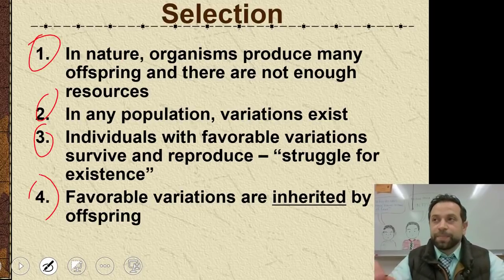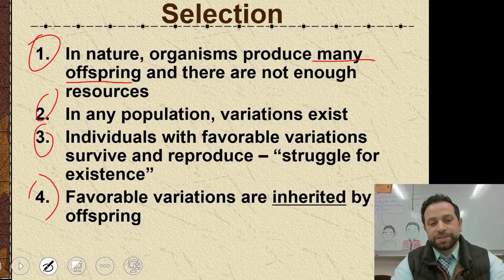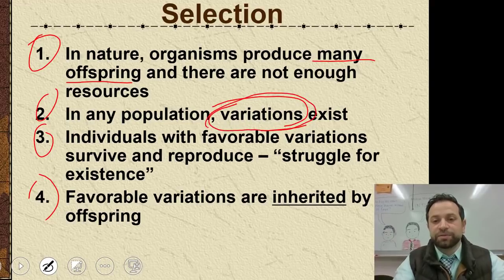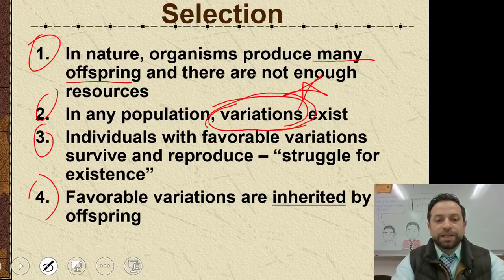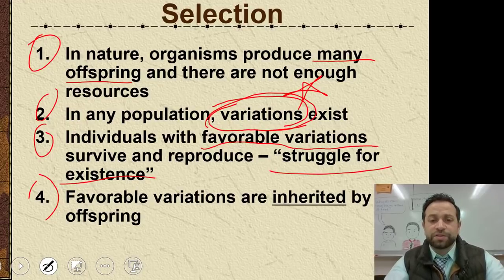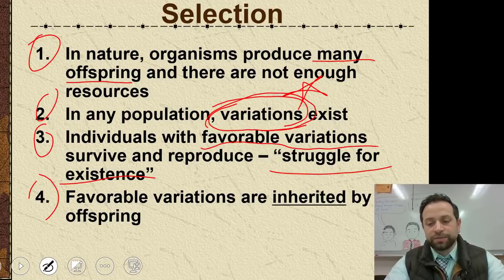First, in nature, organisms produce many offspring, and there aren't always enough resources. Second, in any population, variations exist — think about where variation comes from, like crossing over. Third, individuals with favorable variations survive and reproduce; this is what we call the struggle for existence. What determines whether a variation is favorable? It is the environment. And last, favorable variations are inherited by offspring — if you have a long neck as a giraffe, you pass on that long neck to your offspring.